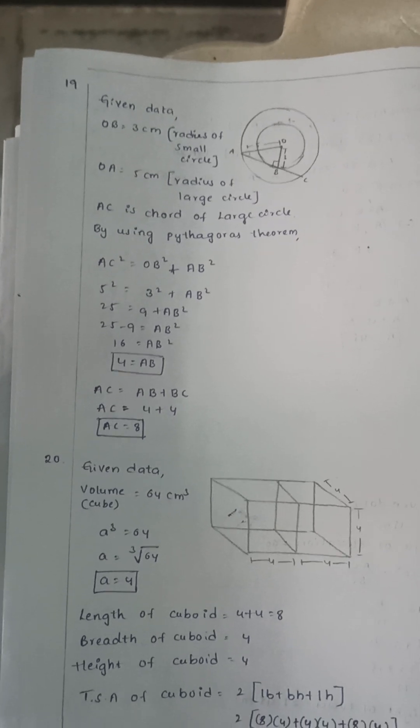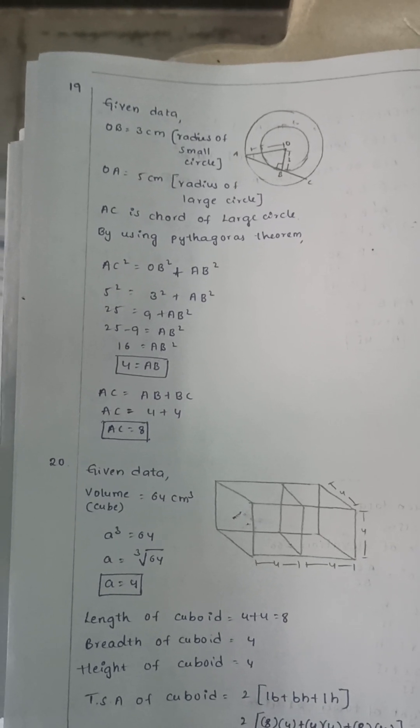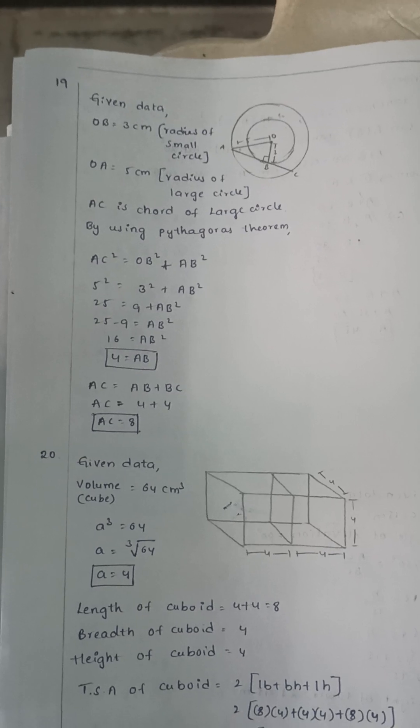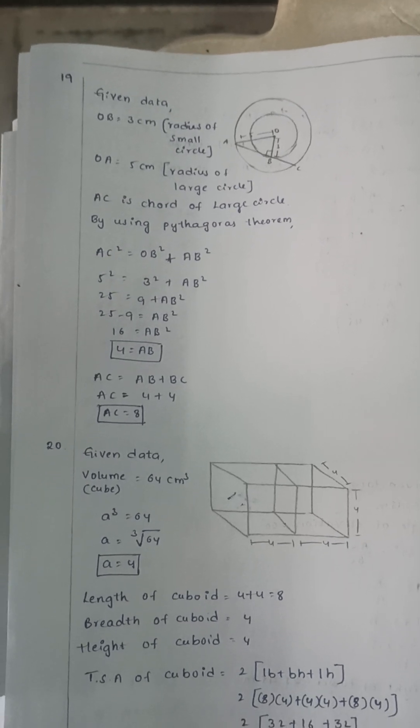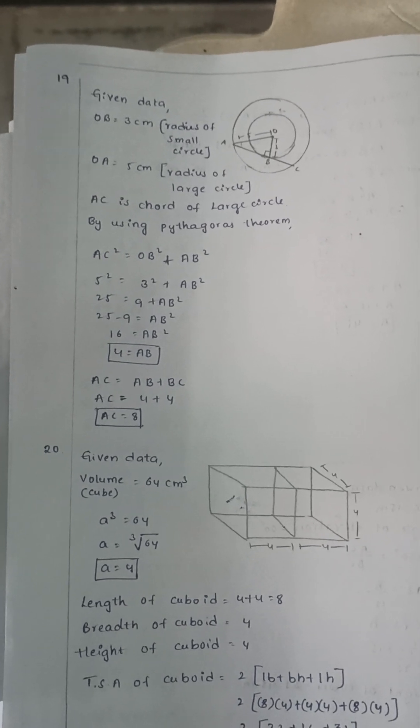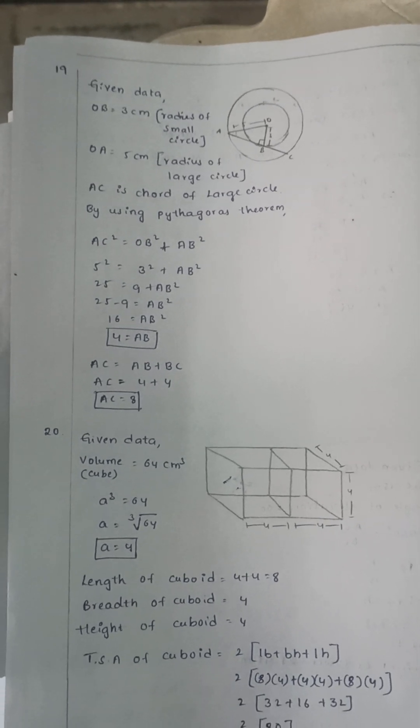Nineteenth question: two concentric circles. The inner circle has radius 3 and the outer circle has radius 5. The length of the chord of the outer circle that is tangent to the inner circle is 8.